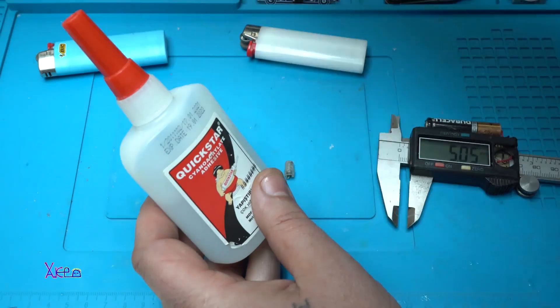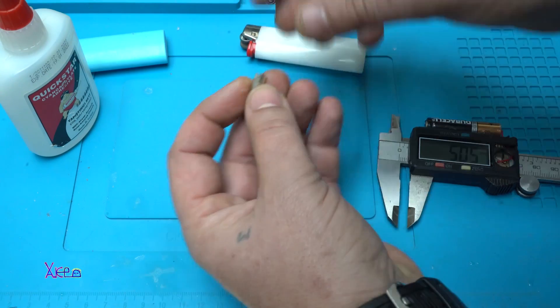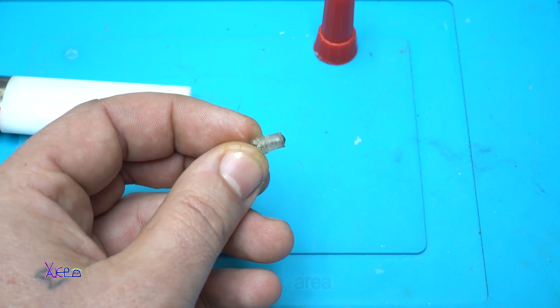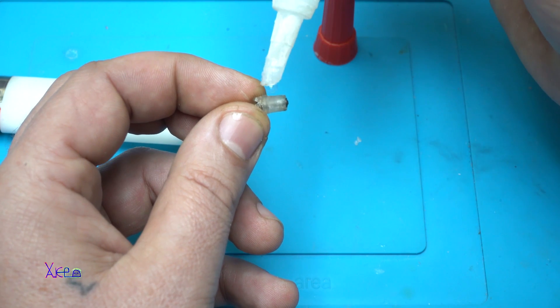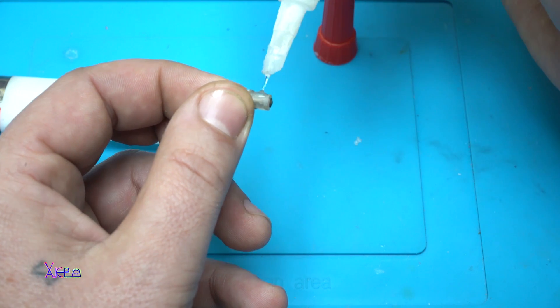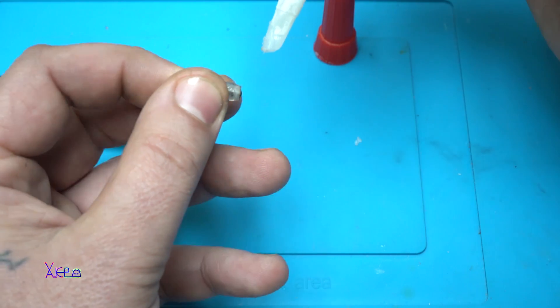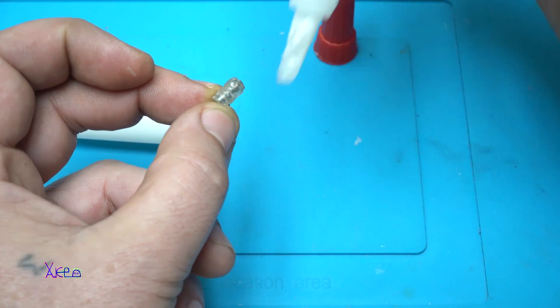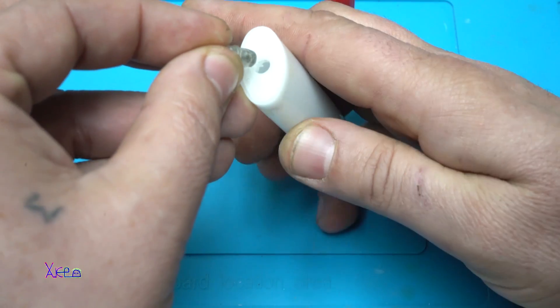Here it is the hole, and this lighter is not working of course. And with two component glue, I'm using my two component glue like this one, I'm gonna fix the valve here. Very gently you will put a small amount of glue on the plastic. Be careful not to glue yourself.